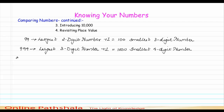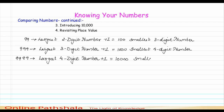Continuing the same — what happens if I have 9999? You will tell me this is the largest four-digit number. And if I add one to it, I get 10,000, which is the smallest five-digit number.